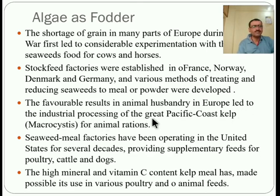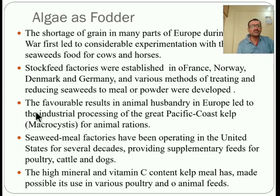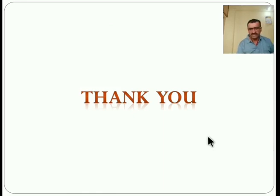The favorable results in animal husbandry in Europe led to the industrial processing of the great Pacific coast kelp for animal rations. Seaweed meal factories have been operating in the United States for several decades, providing supplementary feed for poultry, cattle, and dogs. The high mineral and vitamin C content of kelp meal has made possible its use in various poultry and animal feeds.